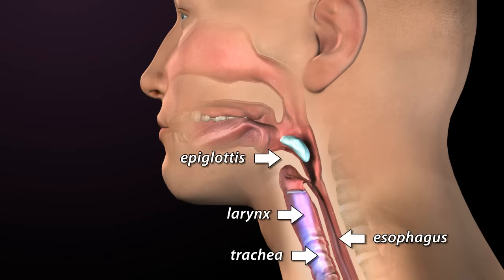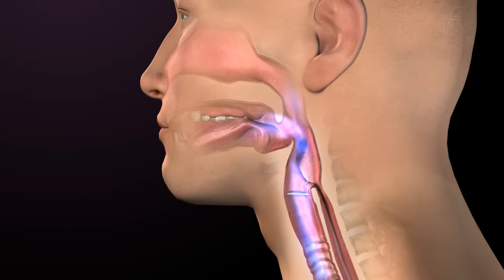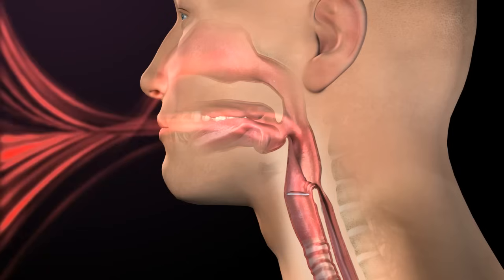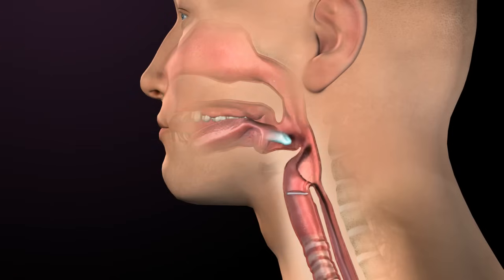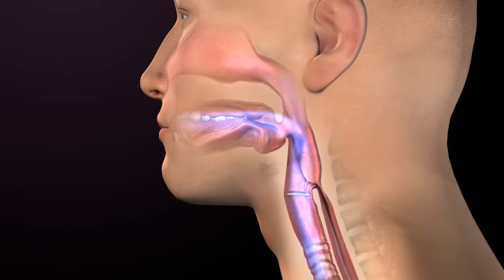For a normal swallow, the vocal folds close and breathing temporarily stops. Positive pressure is generated below the vocal folds. Because the swallow is both mechanical and pressure-driven, food and liquid are propelled into the esophagus and at the same time kept out of the larynx and trachea for a safe and effective swallow.